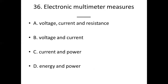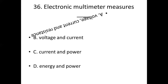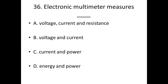Thirty-sixth bit. An electronic multimeter measures dash. Option A: voltage, current and resistance. Option B: voltage and current. Option C: current and power. Option D: energy and power. Answer: Option A, voltage, current and resistance.